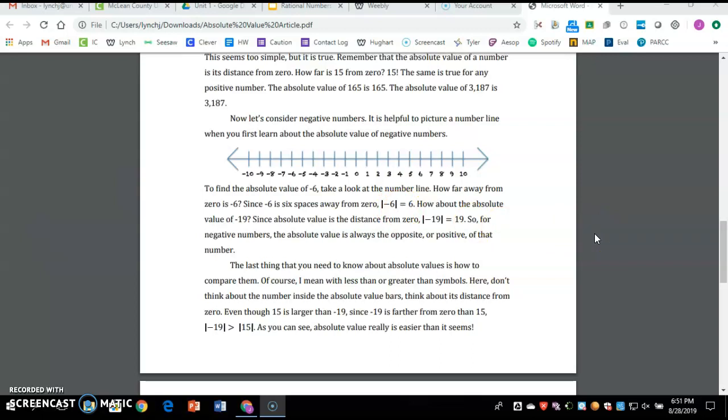Since absolute value is the distance from zero, the absolute value of negative 19 equals 19. So for negative numbers, the absolute value is always the opposite, or positive, of that number.